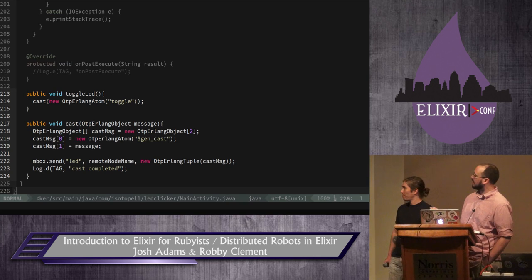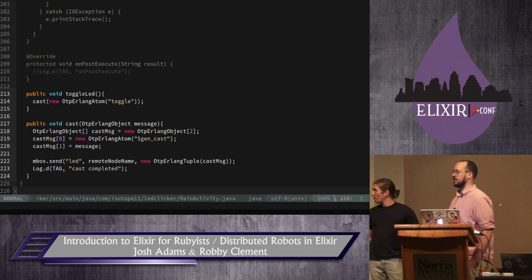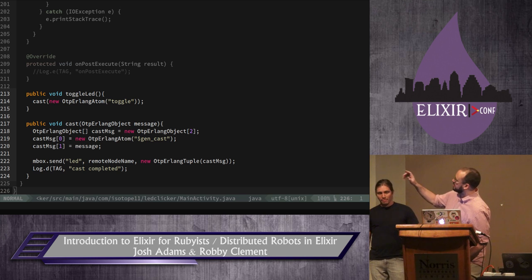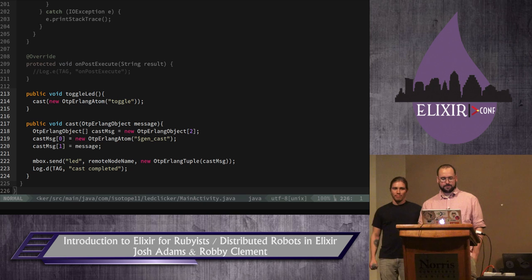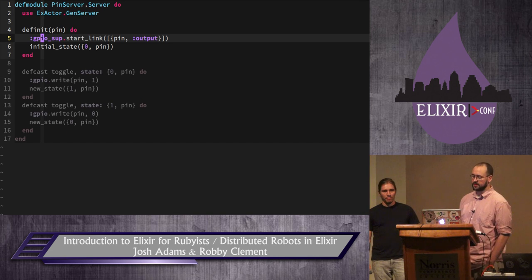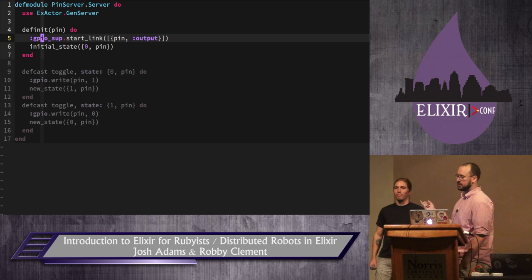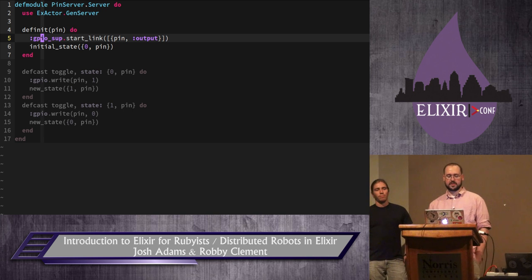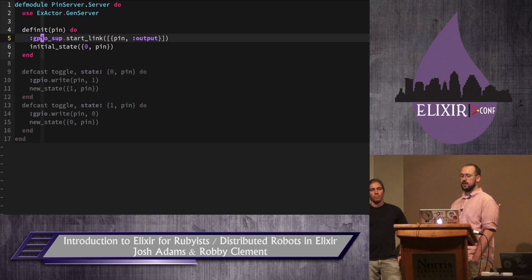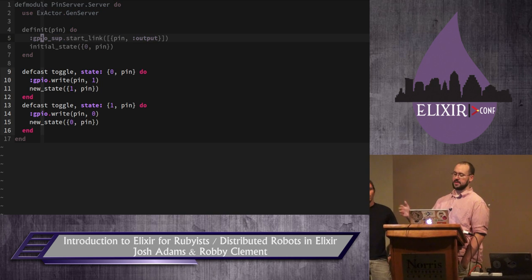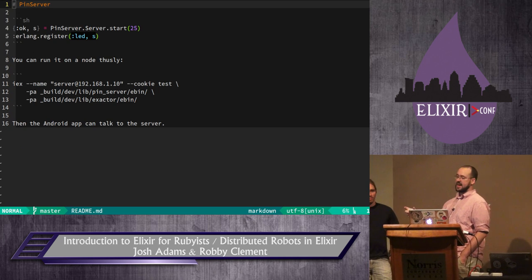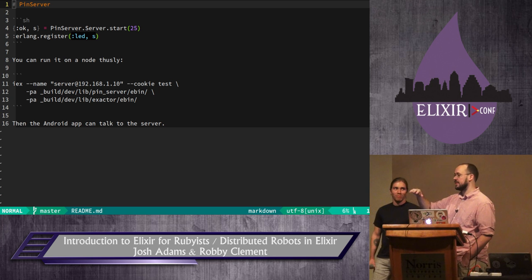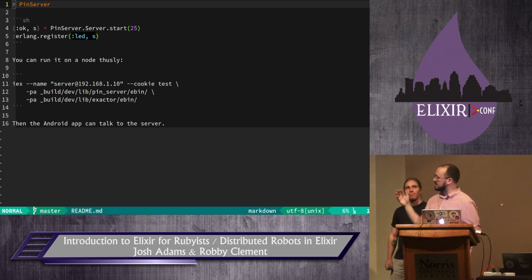Here you can see what one of those casts looks like. When you call cast in OTP, all that's really happening is you're sending a message that is a tuple whose first element is the atom $gen_cast, and that contains a tuple containing the message. On the Elixir side, we've used ExActor, which is a great library, to build a basic GenServer responsible for toggling a pin. Our initial state is a tuple representing the state of the pin starting off. You call toggle on it and it'll flip the state every time, updating the state on the GPIO pin. We run the server, register it with the atom :led, deal with the Erlang cookie, and with that we close the loop.